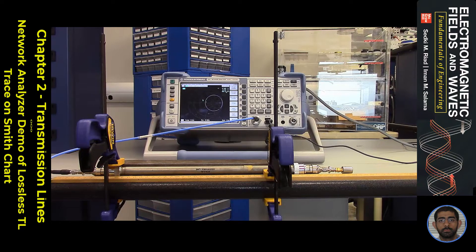Hello. In this demonstration, we will show the variation in the impedance and reflection coefficient as we go across different points along the transmission line, and the trace of this variation on the Smith chart.